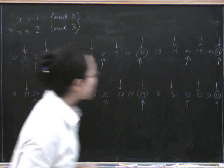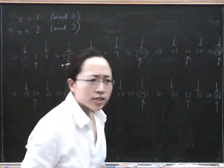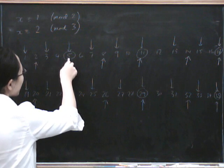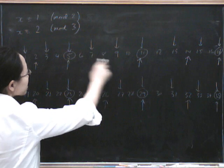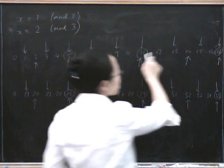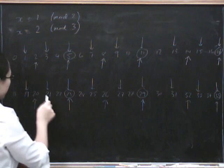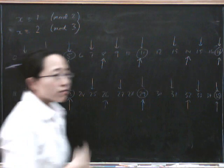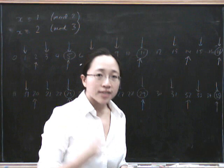Can you see a pattern emerging? Where are all these solutions? There's 5, and then how much further along is the next one? Six. How much further along is the next one? Six. How much further? Six. So what we've got is a repeating pattern that repeats itself every 6 numbers.